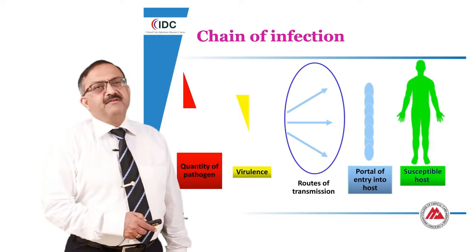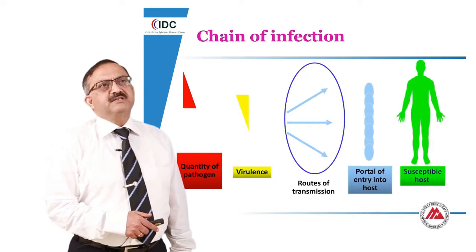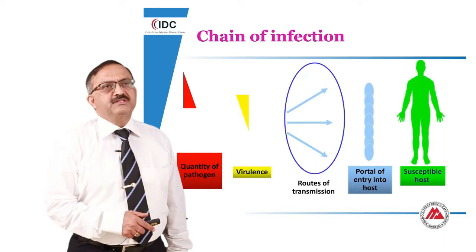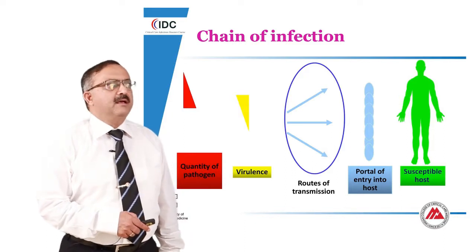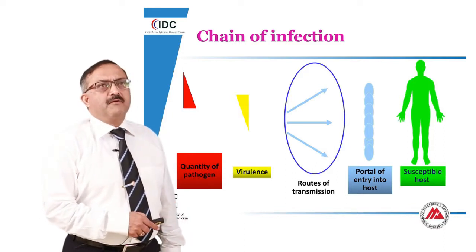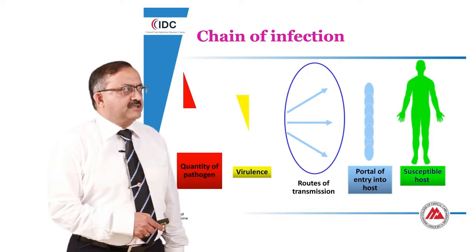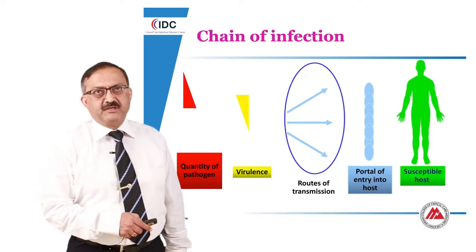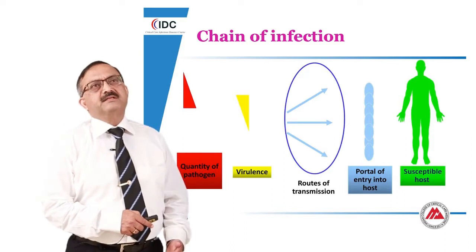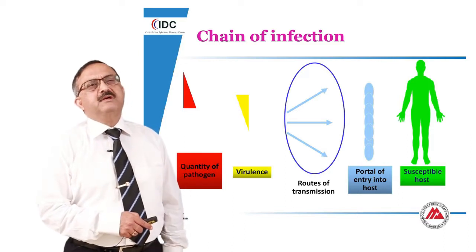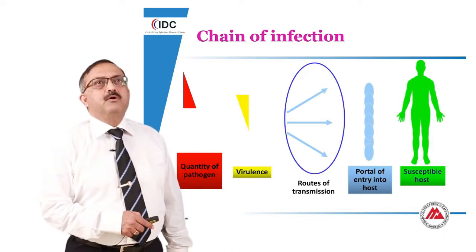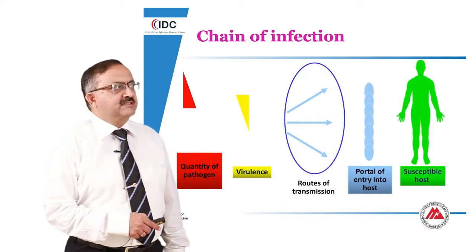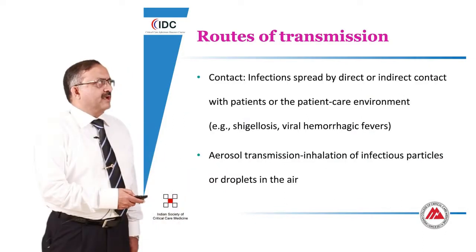Chain of infection. Consequences of infection due to the endogenous flora are very high. They depend on the quality of the pathogen available for causing infection, and the virulence of the pathogen. The trend has now moved towards more resistant pathogens colonizing the patient that is brought into the intensive care units.